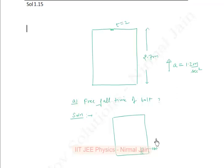Then after 2 seconds, the velocity u of elevator will be 2.4 meter per second using v equals u plus at.